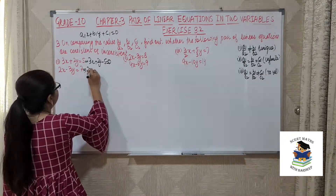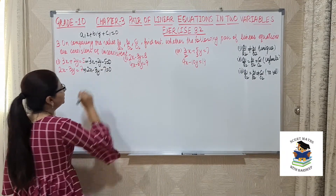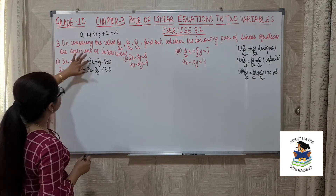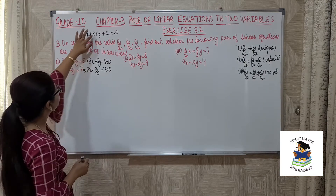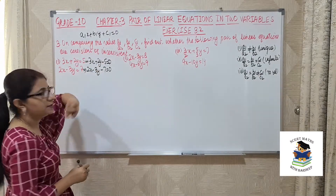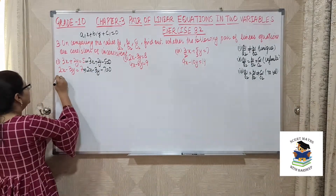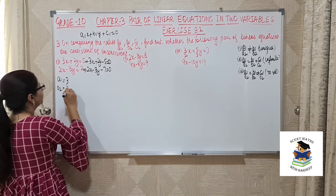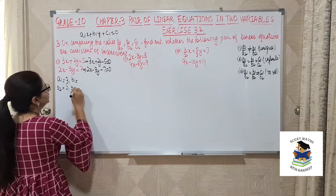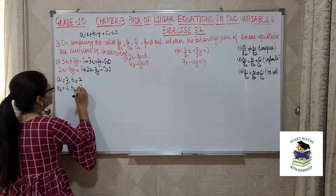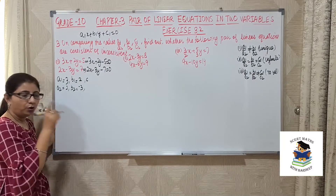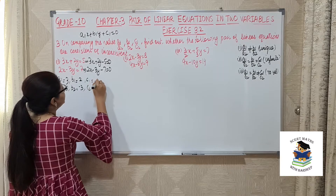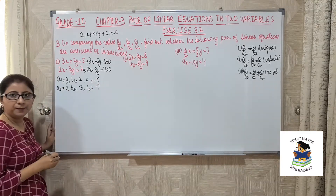The second equation becomes 2x − 3y − 7 = 0. As I have already told you, a1 is the coefficient of x, b1 is the coefficient of y, and c1 is the constant. So here a1 and a2 are 3 and 2. b1 and b2 are 2 and −3. Always take the negative sign along with the variable. c1 and c2 are −5 and −7.